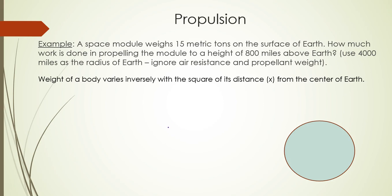So in this example, there's a space module that weighs 15 metric tons on the surface of Earth. How much work is done in propelling the module to a height of 800 miles above the Earth? And we're going to assume a radius of 4,000 miles for planet Earth. We'll ignore air resistance and propellant weight.